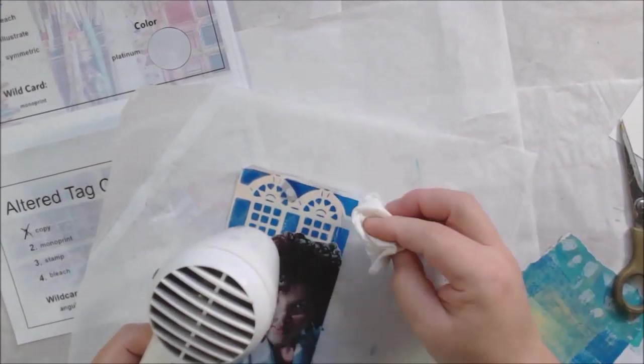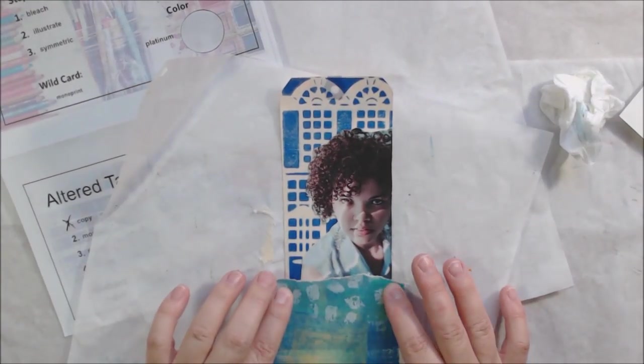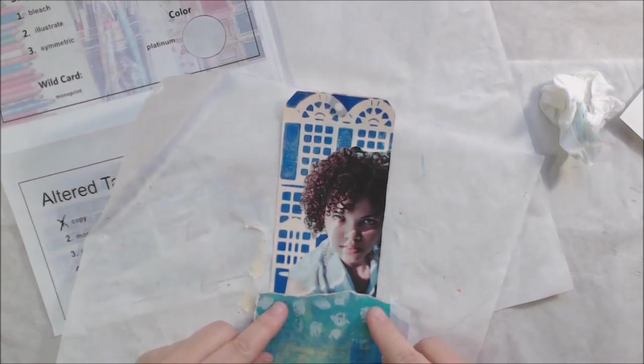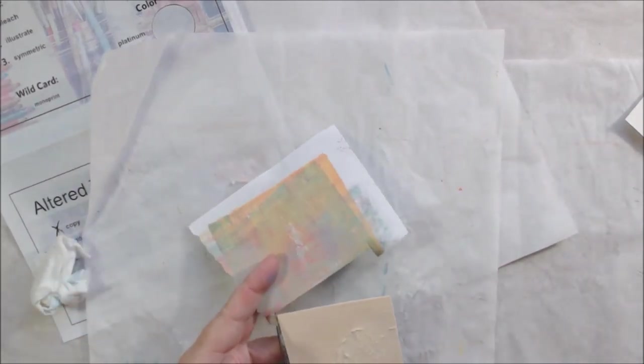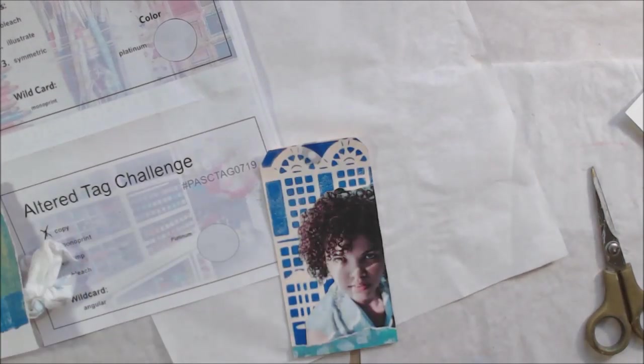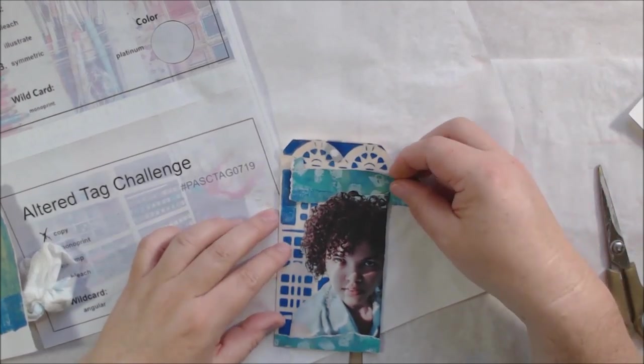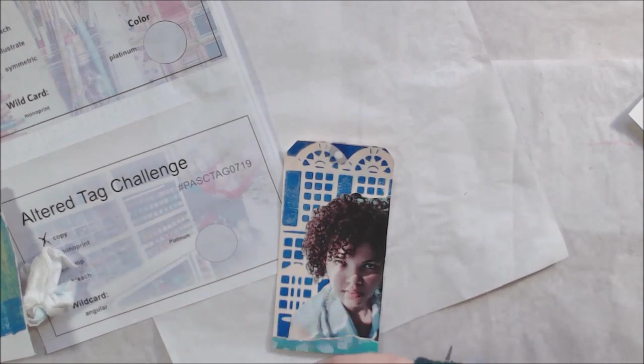I decided I wanted the monoprint to be behind the girl and I had already glued the girl to the tag, so I just got a different tag. I have a thousand of these, well probably down to maybe nine hundred now. I cut out the whole thing so now I have a much thicker piece of paper to glue down, but I just put the monoprint first, put the image on top.